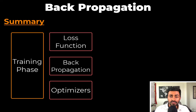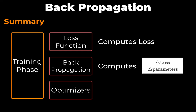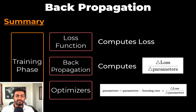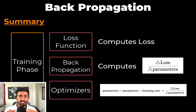Before we go, let's do a summary. Neural networks have a training phase to learn a specific task. The training phase has three concepts: a loss function, optimizers, and backpropagation. The loss function is used to compute the error of a neural network's prediction. This loss is backpropagated through the network to compute the gradients with respect to the parameters. These gradients are then used by the optimizer algorithm to update the parameters of the neural network — and hence, the neural network learns. If you're interested in building your first neural network with PyTorch, check out the linked video. Thank you all so much for watching — if you think I deserve it, please give this video a like, subscribe, and I'll see you in the next one.